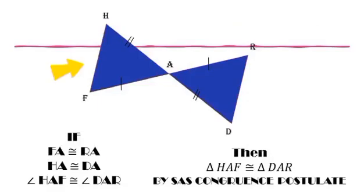At sa last figure natin, meron tayong triangle HAF at saka triangle DAR. FA is congruent to RA and then HA is congruent to DA. And now, nasaan ang included angle?